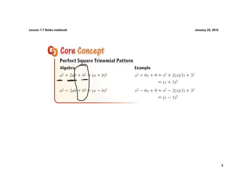And then the other thing is, if the middle term is positive, then the sign in the binomial is positive. If the middle term is negative, then the sign is negative.